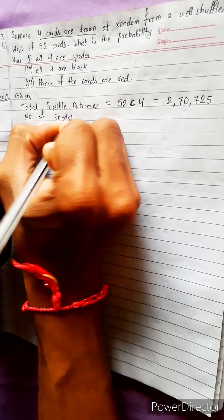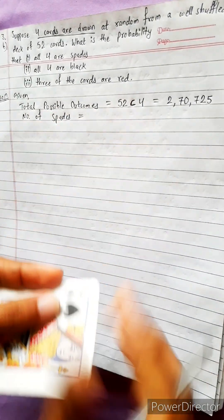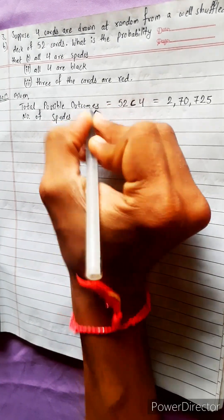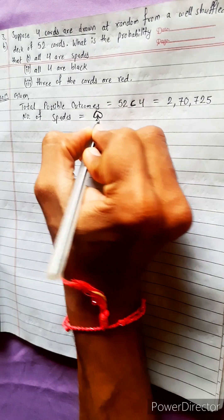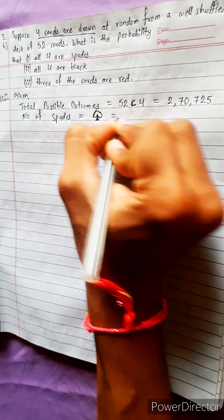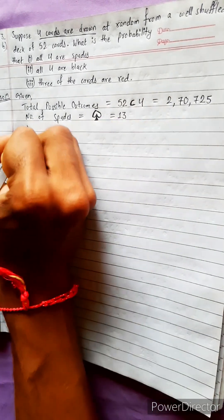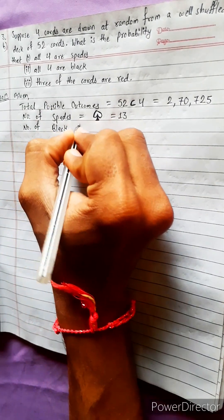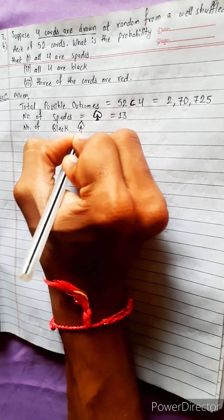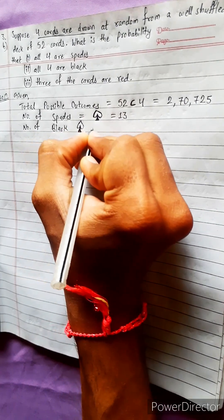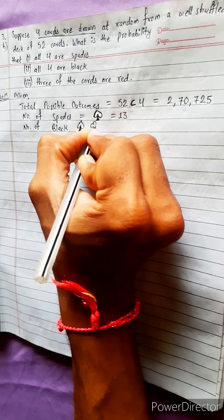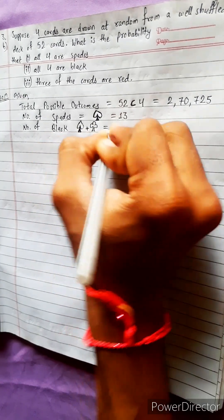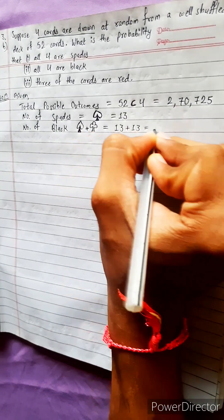Number of spades: there are 13 spades. Number of black cards: spades and clubs are both black, so we add 13 plus 13, which gives 26 black cards. Red cards are also 26.